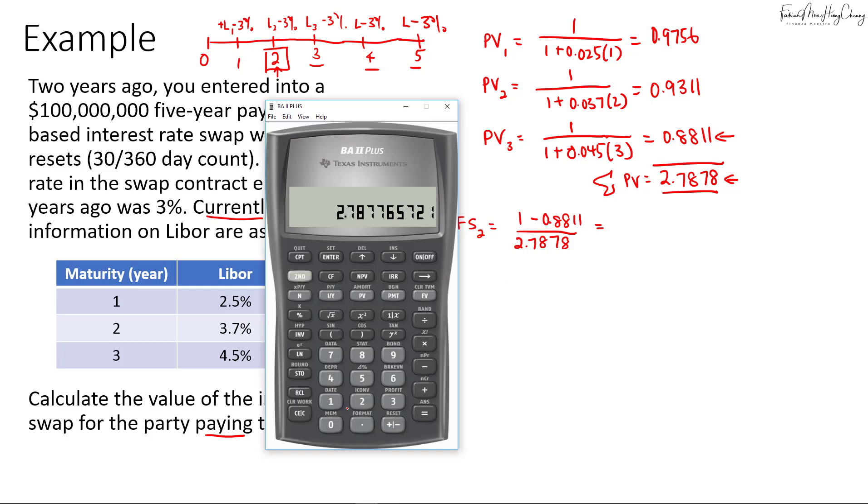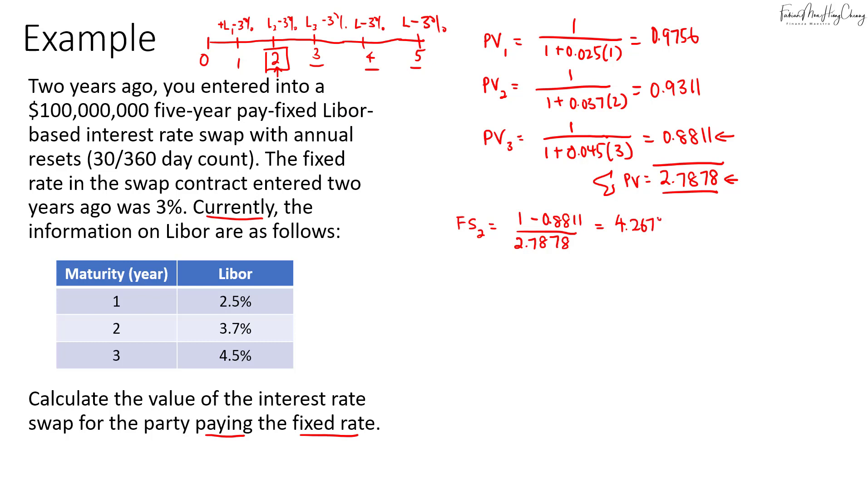So that will give us 1 minus the last PV, which is 0.8811, then we divide by the total PV. So that's about 4.267%. So we have the updated rate. So when we entered into the contract, we paid 3%. Now to close the contract, we'll need to do a receive fix. So as of now, we can do a receive fix at 4.267%. So that means I'm selling the contract at a higher price, which is good.